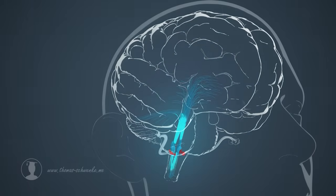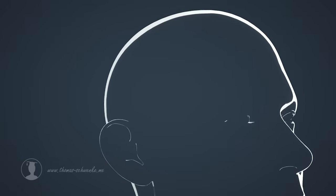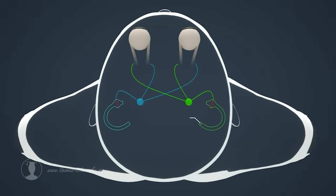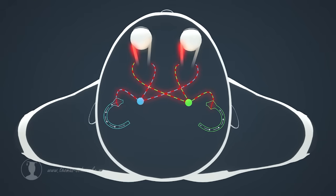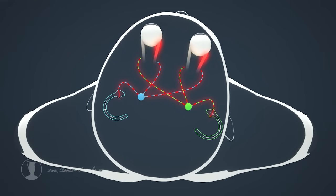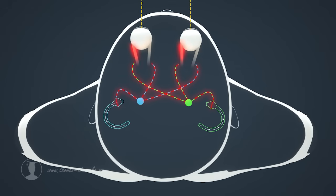However, we need the vestibular system and its semicircular canals not only for our balance. Our eyes are also moved with the help of the vestibular canals and sacs. The semicircular canals are connected to the muscles of our eyes via the vestibular nuclei and other brain regions. When the head moves, the stereocilia are deflected on both sides, which results in strong impulses being sent from one side and weak impulses being sent from the other side.